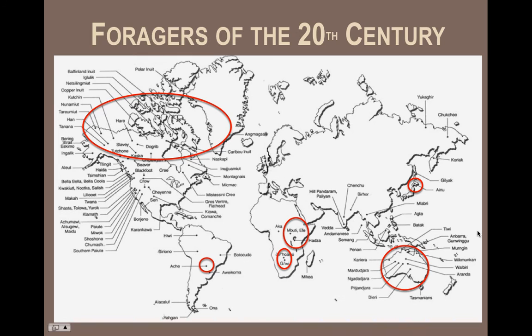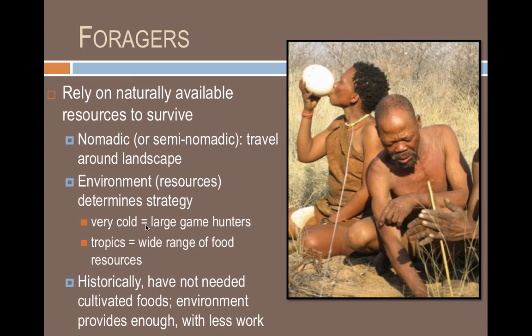Looking at a map of foragers of the last 100 years, we can see forager communities existing until very recently in many parts of the planet. If we were to travel across North America today, we wouldn't find these groups living the traditional way. Hunter-gatherers travel nomadically, and they do this essentially because they're following food. Because they get all their food from the wild, they have to travel to where the food is.